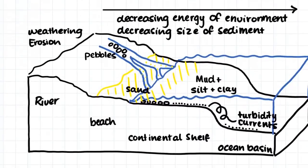In this image here we can see there is a decrease of energy in the environment and a decreasing size of sediment as you move away from the shore. Up here we have the weathering and erosion of the rock and this creates our sediment. This sediment then flows down the river and pebbles are deposited where the river begins to flow too slowly to carry them along. Then we move towards the beach.